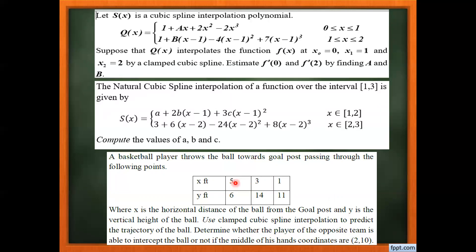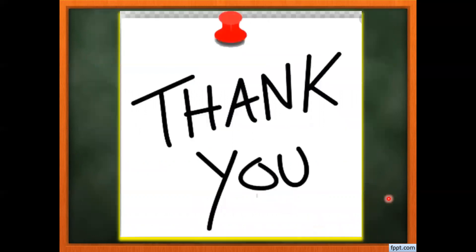Since coordinate x=2 lies between 3 and 1, we substitute x=2 into S1. If S1(2) = 10, the player intercepts the ball; if not, the player cannot intercept. That's all for today — hopefully you will have a good interactive session. Thank you.